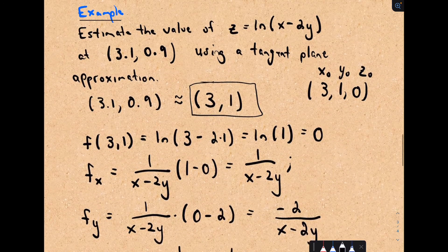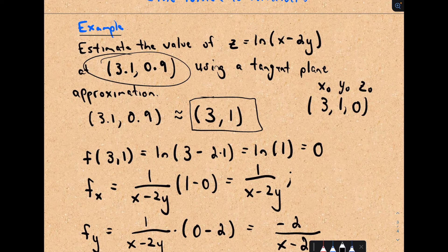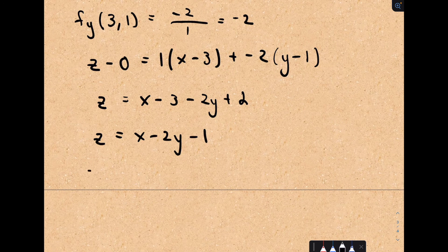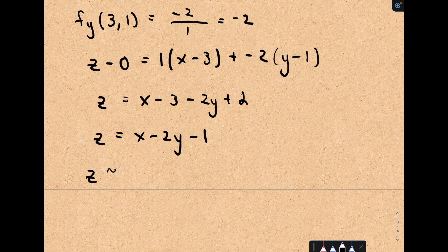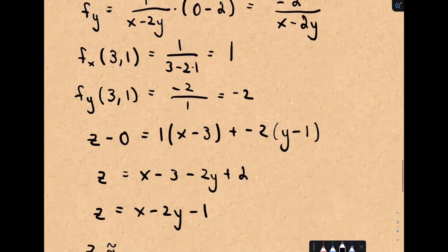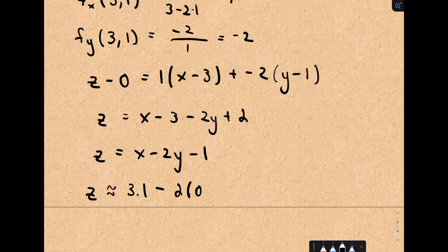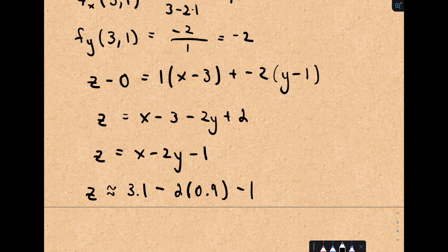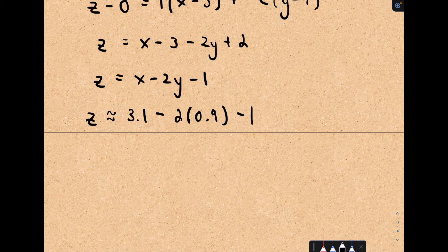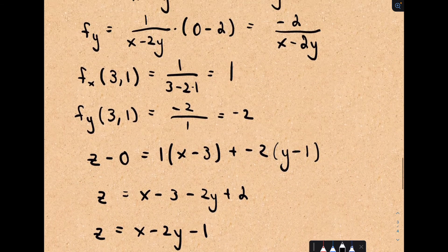So if we want to approximate this value when we plug in 3.1 and 0.9, we'll just plug it into here now. So it says z should be, we're doing an approximation, so x was equal to 3.1 minus 2 times 0.9 minus 1. And whatever that equals, that's going to be your approximation.